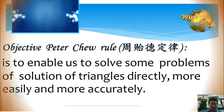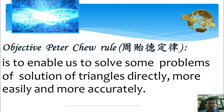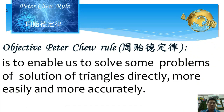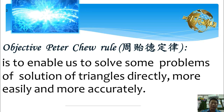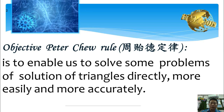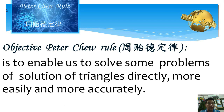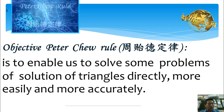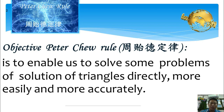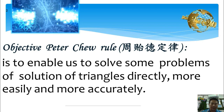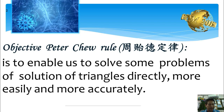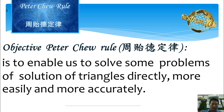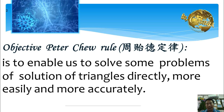The objective of Peter Chiu Rule is to enable us to solve some problems in solution of triangle directly, more easily, and more accurately. Peter Chiu Rule is not only suitable for advanced mathematics students, but also for high school students, because solution of triangle is an important chapter in both advanced mathematics and high school math — similar to calculus, it is also important in engineering mathematics.